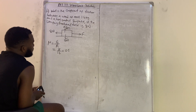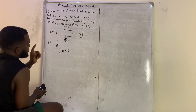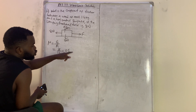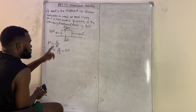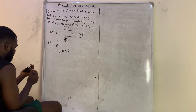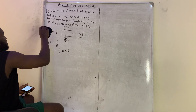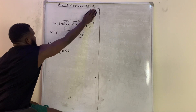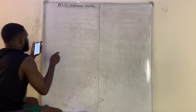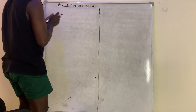Another thing to consider: the coefficient of static friction is always less than one. If you mistakenly put 16 divided by 8, you get 2, which is not less than one and is therefore incorrect. This is a useful trick to know which value goes on top and which goes on the bottom.